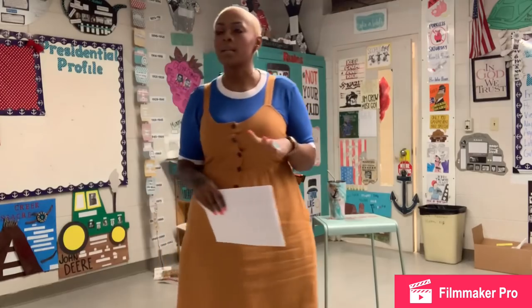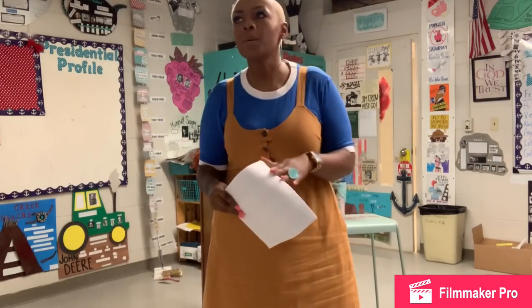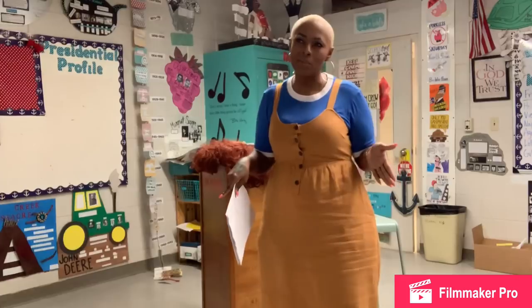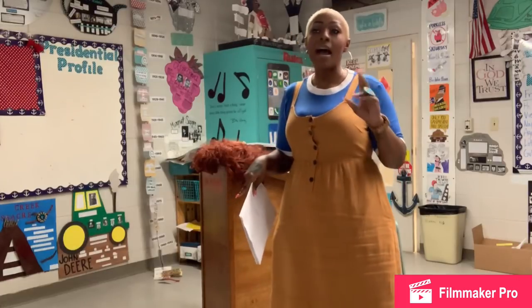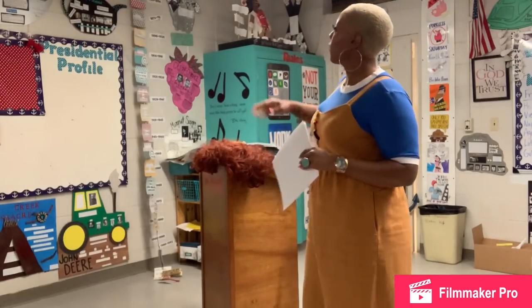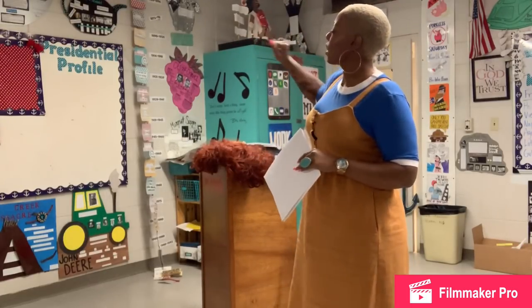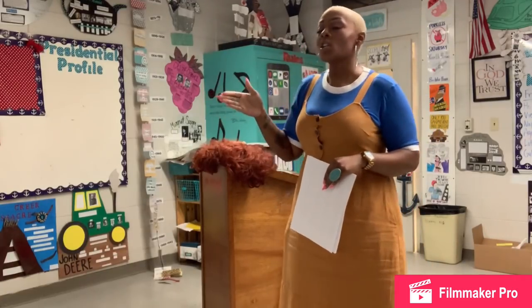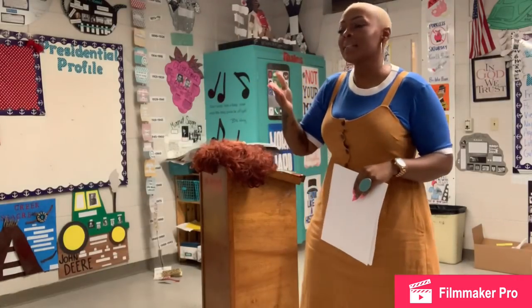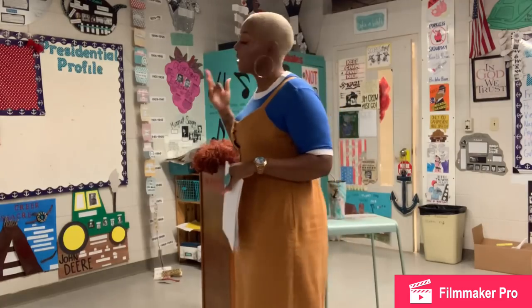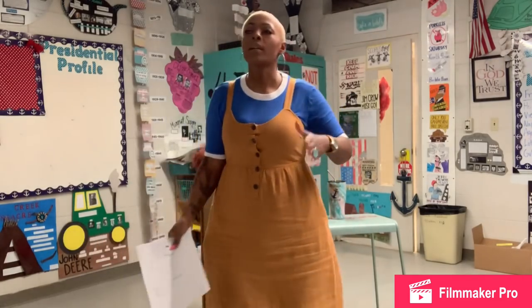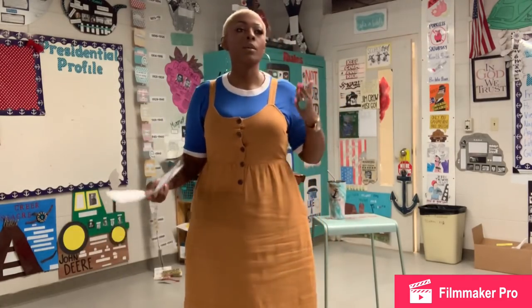The next one is industry and urbanization. The way the book teaches this, they break it down into two different chapters, but I teach it as one. Industry and urbanization happened from the mid to late 1800s — from about 1865 to the early 1900s.